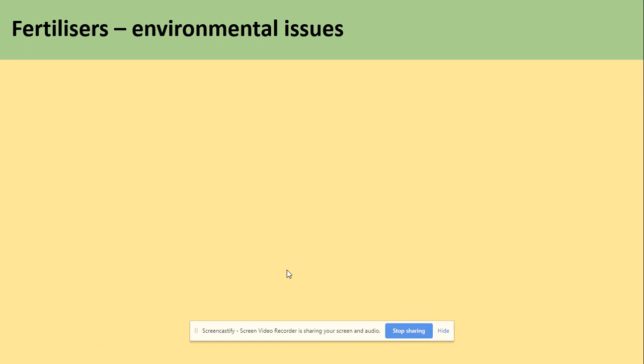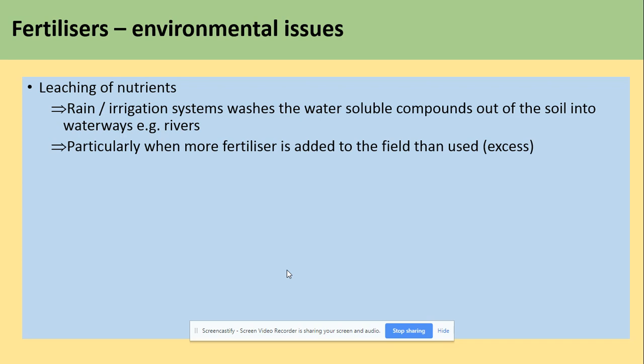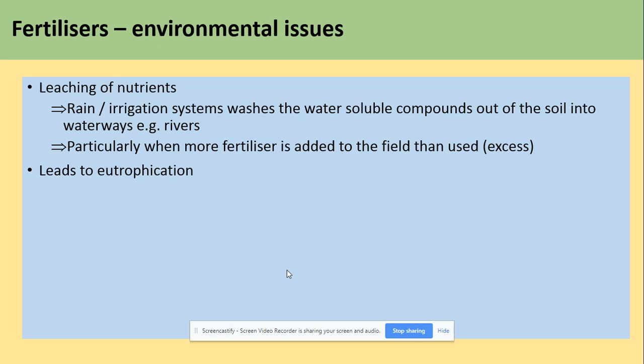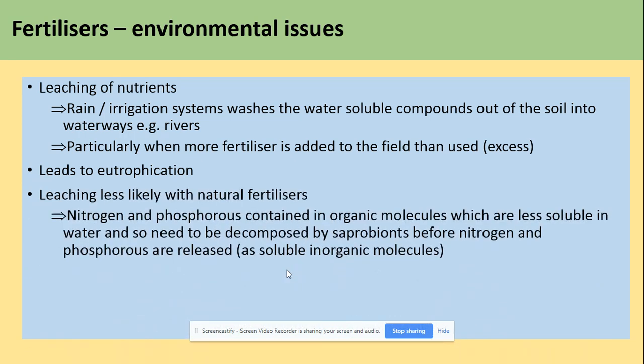To summarize, the issues are concerned with leaching of nutrients. For example, rain could wash water-soluble compounds out of the soil into waterways. This takes place very often when fertilizers are added to the field, and this will then lead to eutrophication. Leaching is less likely with natural fertilizers.